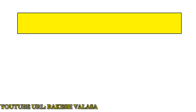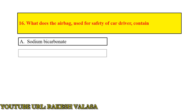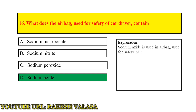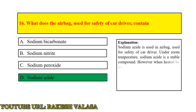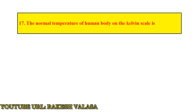Question number 16: what does the airbag used for safety of a car driver contain? Answer: sodium azide. Explanation: sodium azide is used in airbags for safety of car drivers. Under room temperature, sodium azide is a stable compound; however, when heated by an impulse, it disintegrates to produce sodium and nitrogen. It only takes about 50 to 100 grams of sodium azide to produce enough nitrogen gas to fill a normal airbag for the driver.